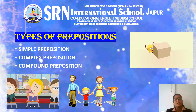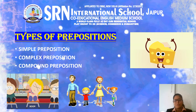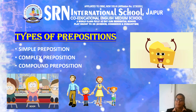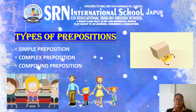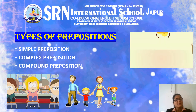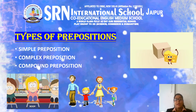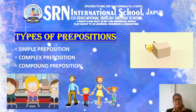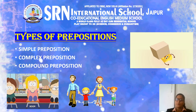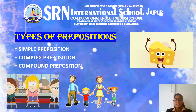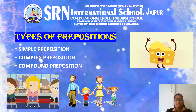There are a total of three types of prepositions. First is simple preposition, second is complex preposition, and third is compound preposition. Let's study about each of them.